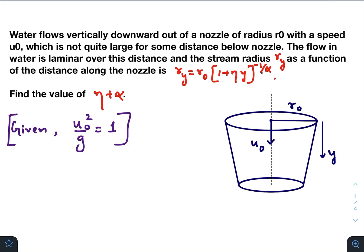We need to find out the value of eta plus alpha, where eta and alpha are constants. Given u0 square by g is 1. Very easy question, we need to just apply the concept of equation of continuity and a little bit of energy conservation.